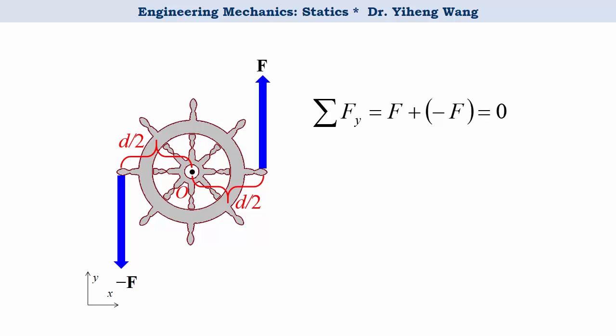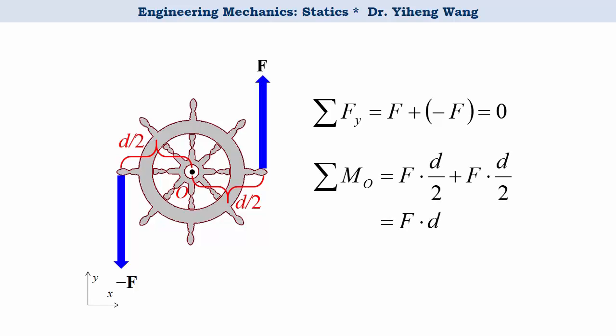However, we can also calculate the total moment caused by these two forces about the center of the wheel. Since both forces are causing counterclockwise rotational effect about point O, they both create positive moments about point O, and the total moment is positive F times d, with d being the perpendicular distance between the lines of action of these two forces.